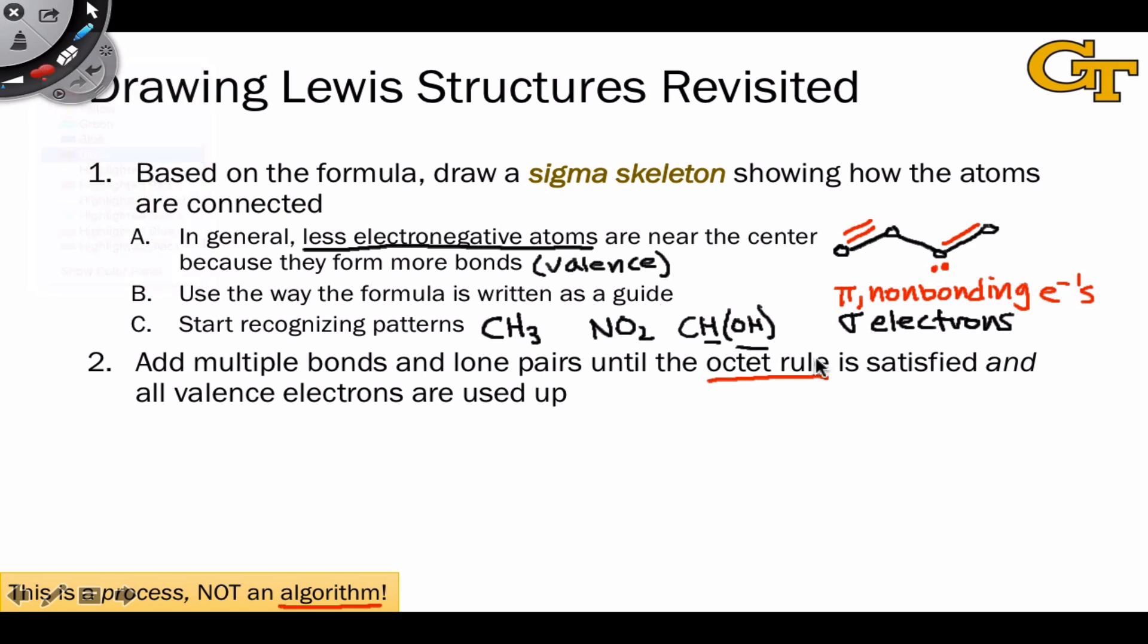And what this means is that the total valence electron count for all of the atoms in the structure is equal to the sum of the sigma electrons, the electrons in the sigma skeleton, and the pi and non-bonding electrons that we find in lone pairs and pi bonds. We then add formal charges based on the formal electron count of each atom relative to the valence electron count of the neutral atom.